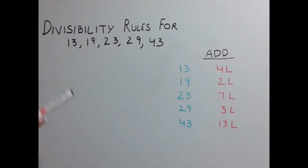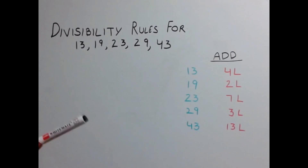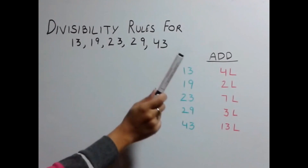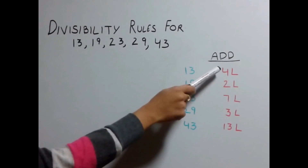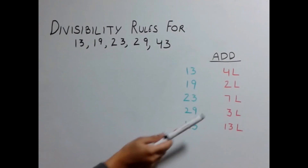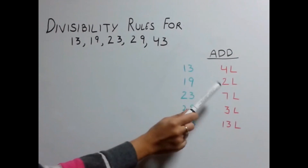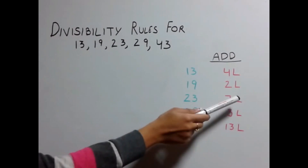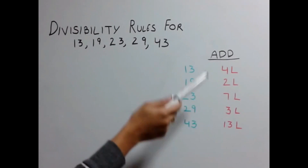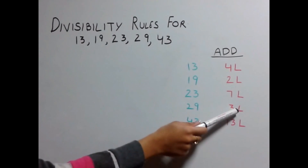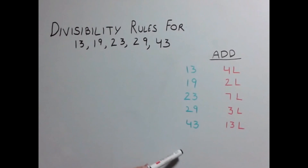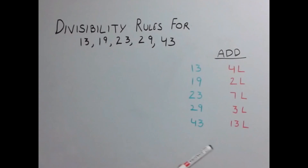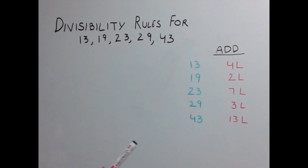To find the divisibility rules for these numbers: for 13, multiply the last digit by 4 and add that to the remaining number. For 19, multiply the last digit by 2 and add the result to the remaining number. For 23, multiply the last digit by 7 and add it. For 29, multiply the last digit by 3 and add it to the remaining number. For 43, multiply the last digit by 13 and add that to the remaining number.